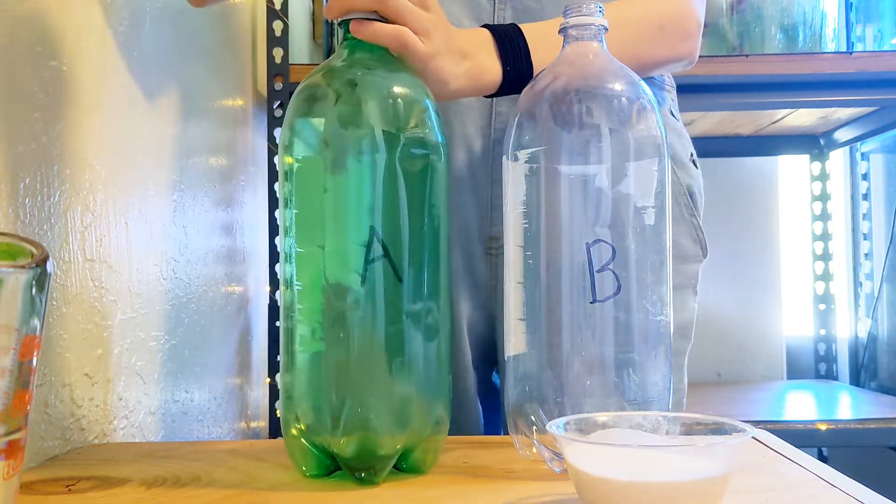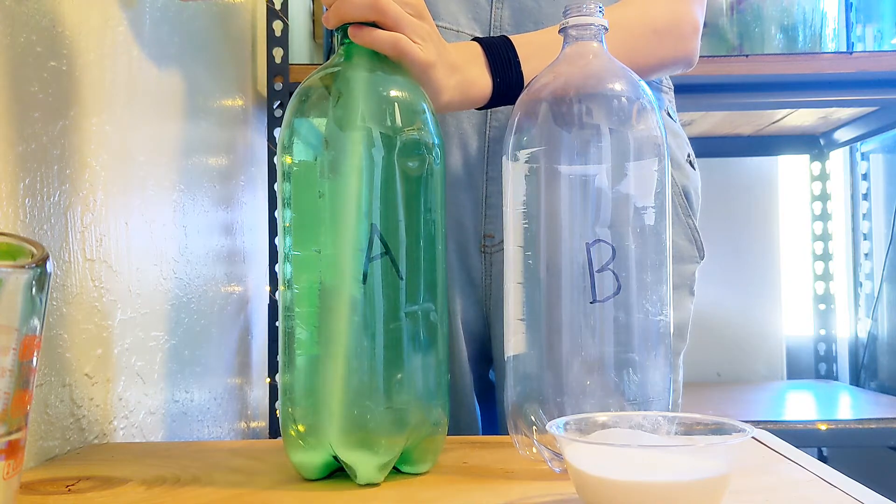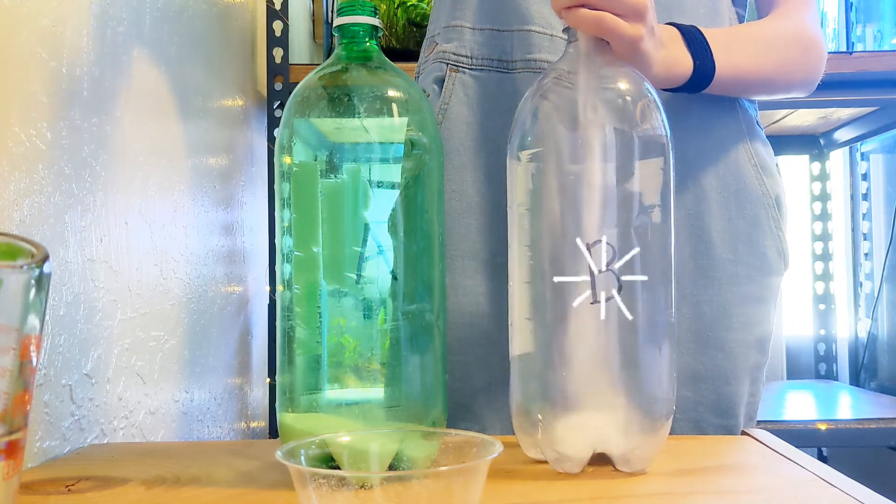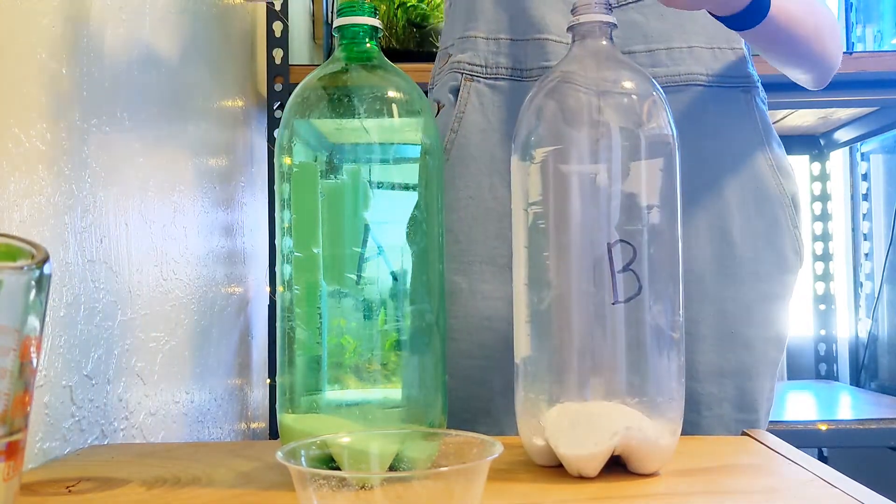Place your citric acid in bottle A because A is for acid! Then place your baking soda in your B bottle because that's for baking soda, right?